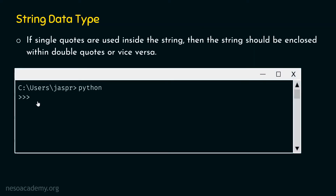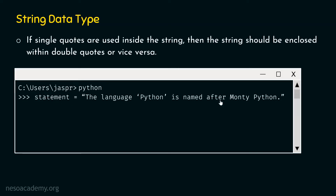In order to understand this statement better, let's consider one example. Again, I am in my interactive shell. I'll type: statement equal to the language 'Python' is named after Monty Python. This entire string is enclosed within double quotes, and we have a substring enclosed within single quotes. As this substring is enclosed within single quotes, the entire string must be enclosed within double quotes. If I hit enter, I will not get an error message because this statement is allowed in Python.